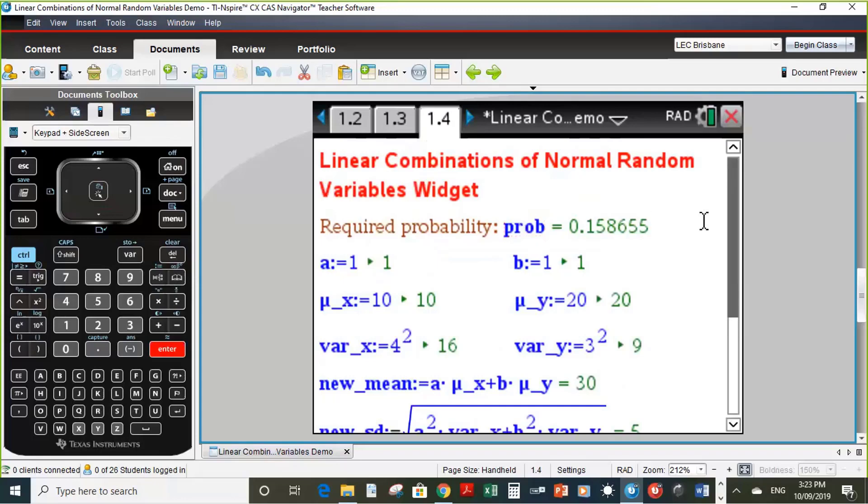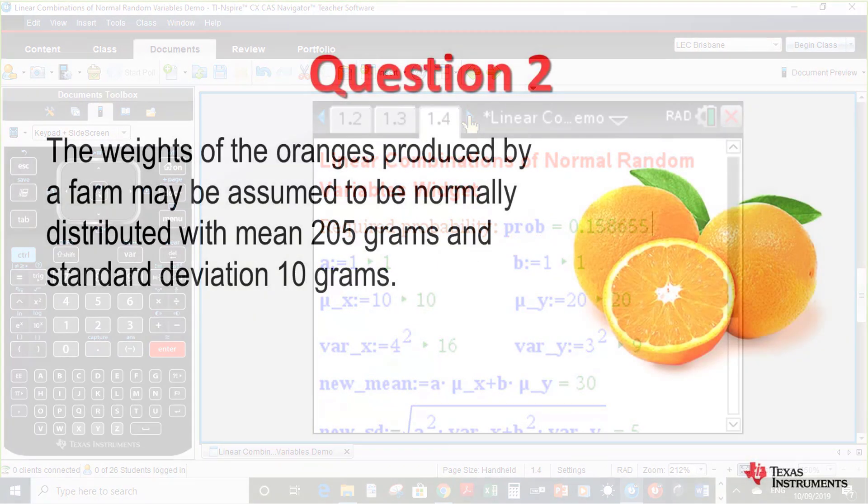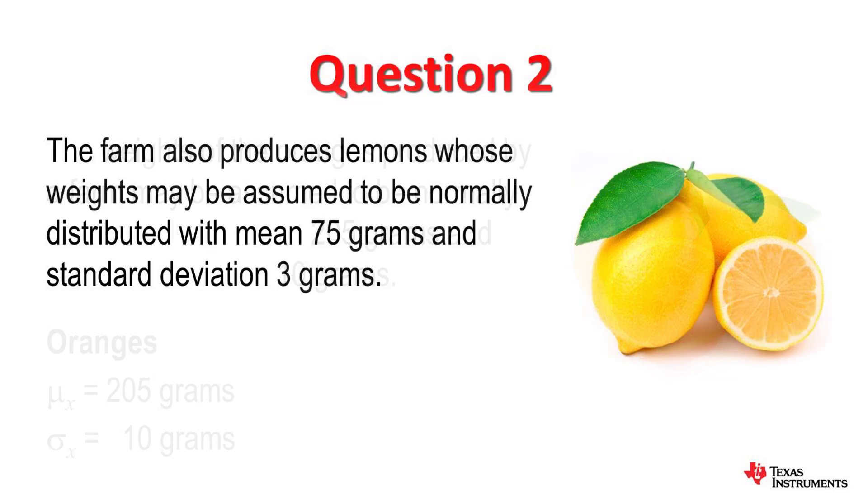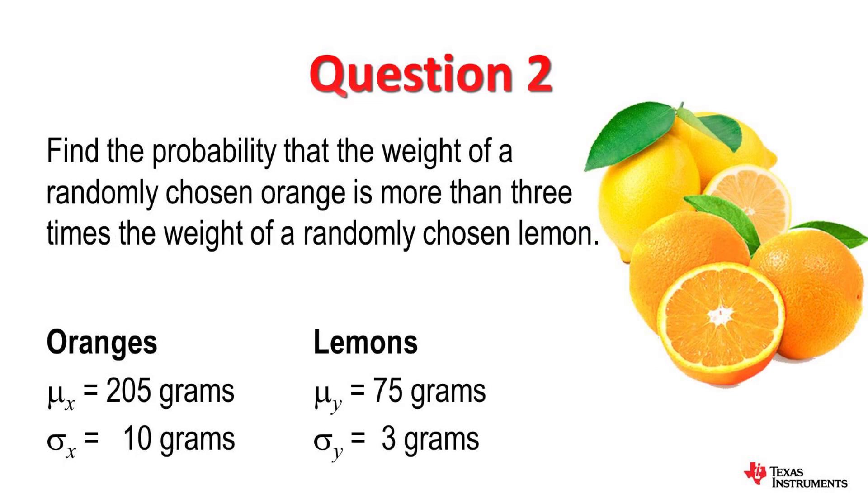But what we'll do now is we'll show you a new example and we'll change the values for a and b, for the mean of x, mean of y, etc., and show you how to answer such a question in the exam. So if we go to the next page, here's our second example: the weights of oranges produced by a farm may be assumed to be normally distributed with a mean of 205 grams and a standard deviation of 10 grams. The farm also produces lemons whose weights may be assumed to be normally distributed with a mean of 75 grams and standard deviation 3 grams. Find the probability that the weight of a randomly chosen orange is more than three times the weight of a randomly chosen lemon. Now these questions, you need to be able to interpret what the question is asking, and once you've interpreted it correctly, then the widget will be of a huge assistance.